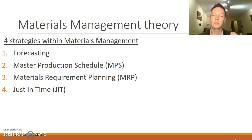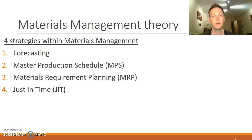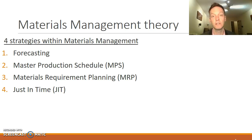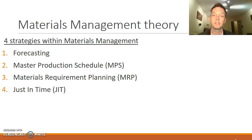You'll see that forecasting, master production schedule, and materials requirements planning really do follow a sequential order, and it's a nice easy way to think of it like that. Then we've got just in time, which is our fourth strategy and can operate independently of the other three. Just in time, as the name suggests, is making sure you only order your materials as you need them and in the quantities you need them, and this is a really good way to save on costs and improve the efficiency of the organisation.